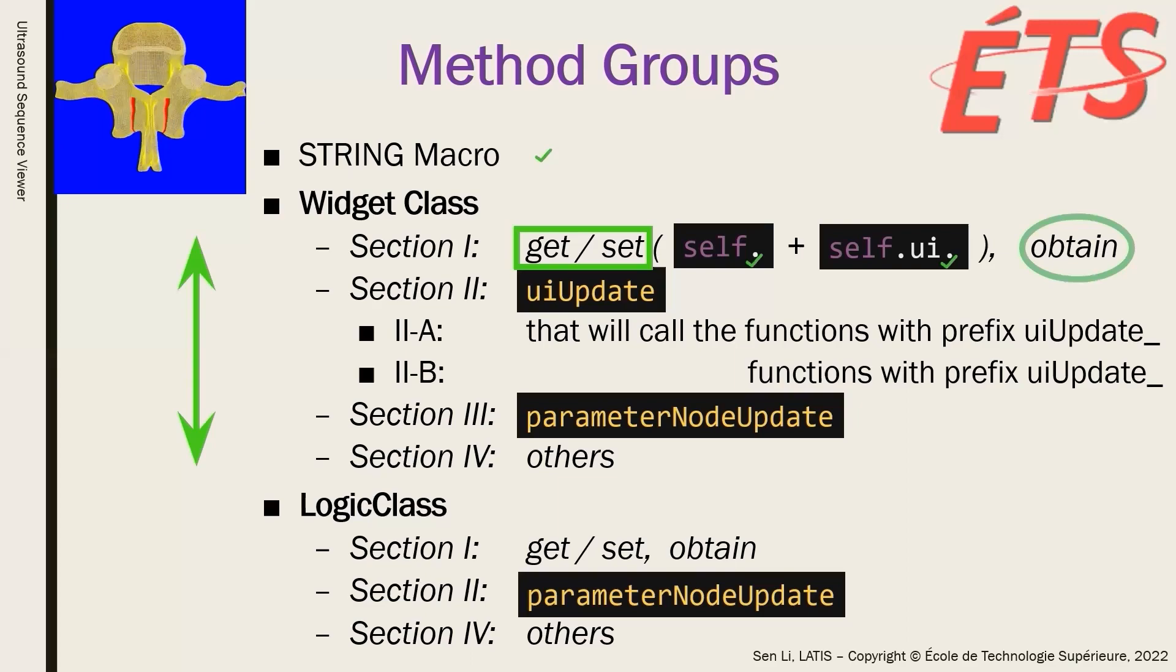Section 2 contains the update of user interface-related functions, which include group capital alpha and group capital beta, as we introduced in the third rule to make the module robust.